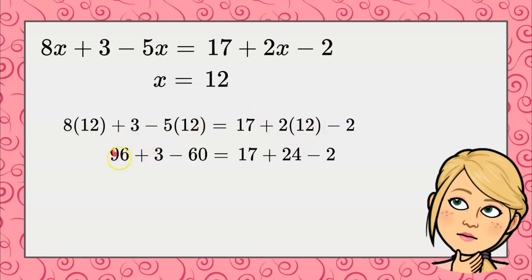Now my next step, I'm going to do 96 plus 3, which is 99, and I still need to subtract 60. 17 plus 24 is 41, and I still need to subtract 2.